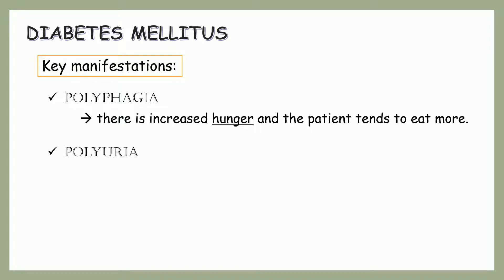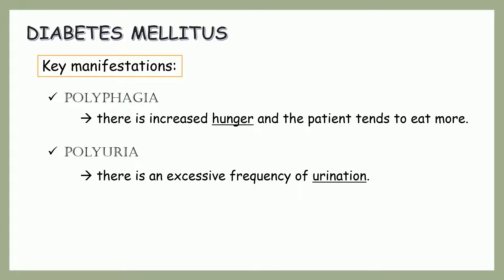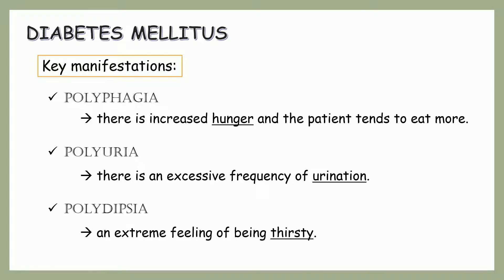Next is polyuria — there is an excessive frequency of urination. This happens when there is increased urine output. It is glucose in the blood that results in osmotic diuresis. The glucose level is high such that it is excreted in the urine, and the glucose pulls out the fluid from the cells, which results in an increased glomerular filtration rate that causes increased urine output. Lastly is polydipsia — there is an extreme feeling of being thirsty. Since there is an increased urine output, cellular dehydration occurs.